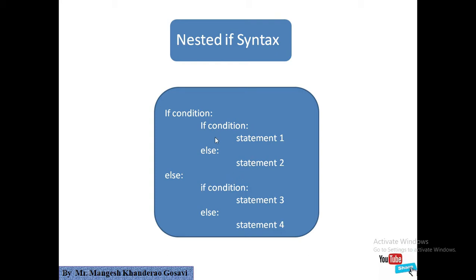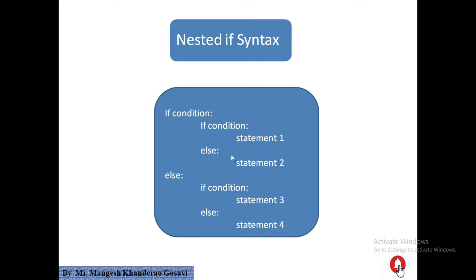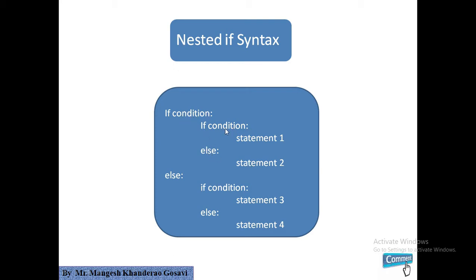Now how this syntax is executed by the Python interpreter: in the body of this outer if, statement one is executed when both the outer if condition and the inner if condition are true. Statement two is executed when the outer condition is true — control comes inside — but the inner condition is false, so control goes to the inner else.